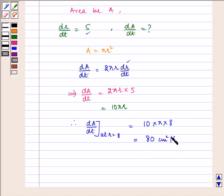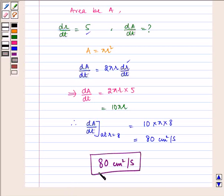Hence, the enclosed area is increasing at the rate of 80 cm² per second when radius is equal to 8 cm. I hope you understood this question. Bye and have a nice day.